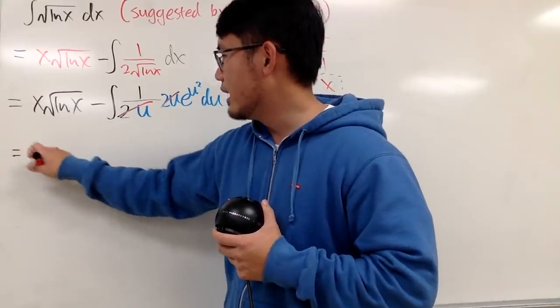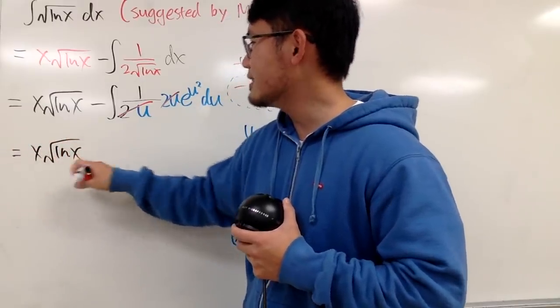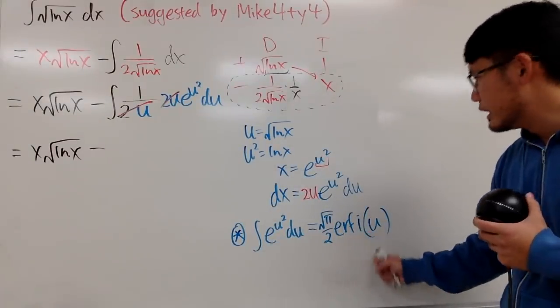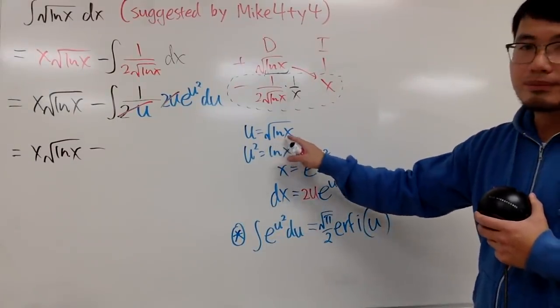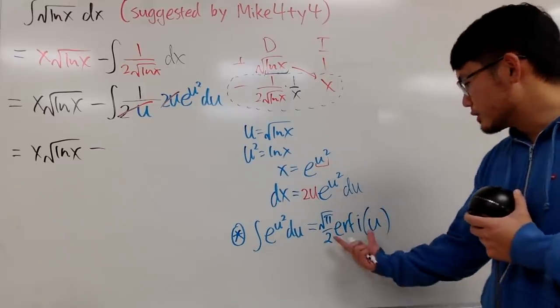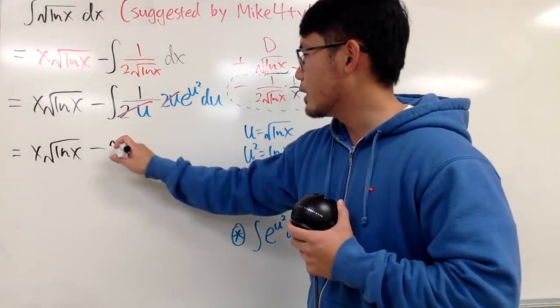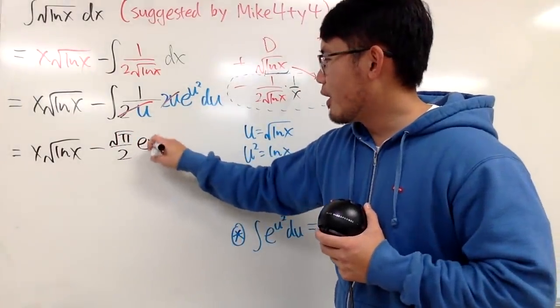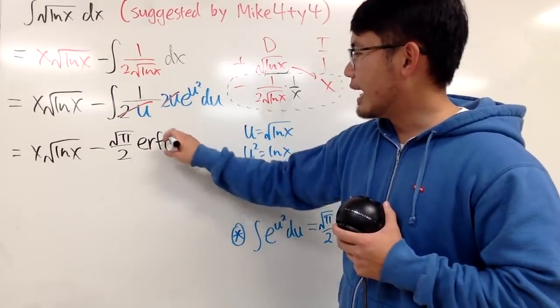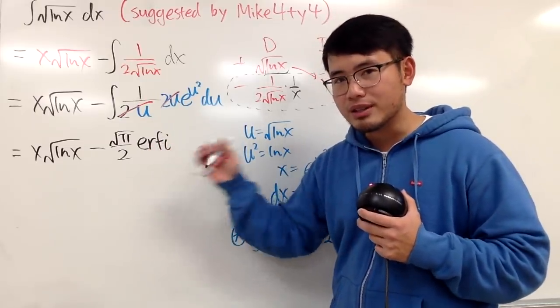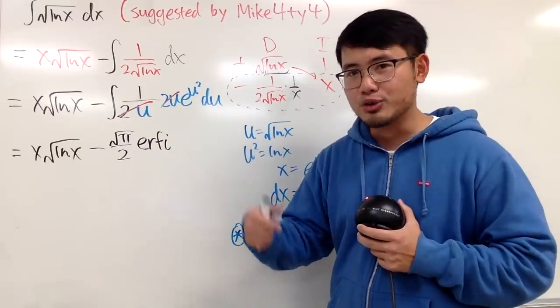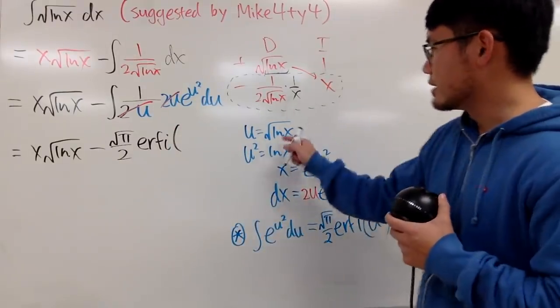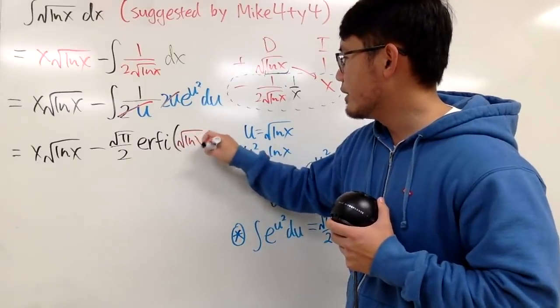In the end, we see this right here is just x square root of natural log of x, and then minus this right here, it's just that, but u is square root of natural log of x. So I'll just put this down right here for the answer, which we have square root of pi over 2, and then E-R-F-I. Okay? This is the imaginary error function. That's the name. Just like when you have log, L-O-G, that's the name as well. And then the input is u, once again, that, so I'll just write that down, square root of Ln x.